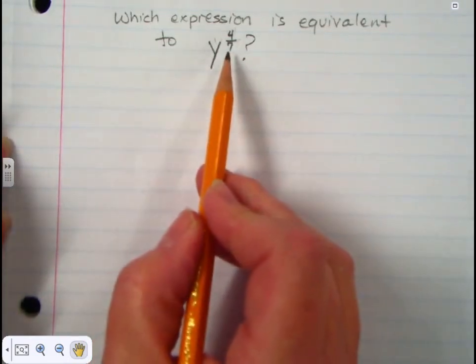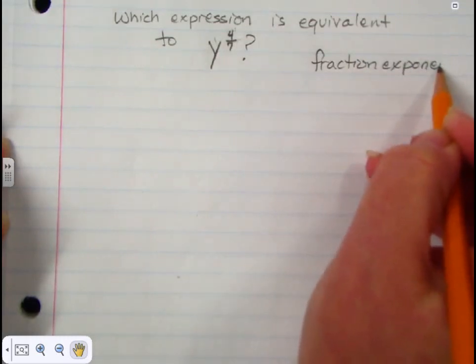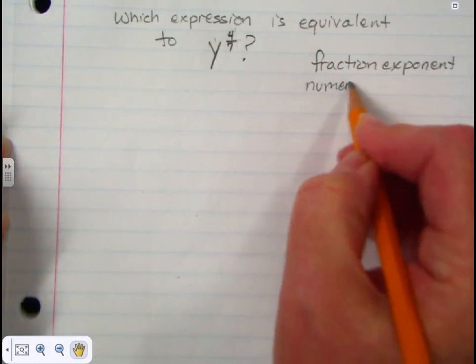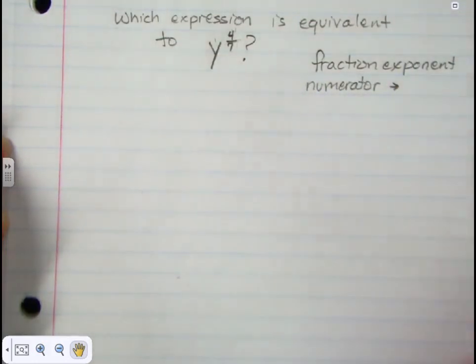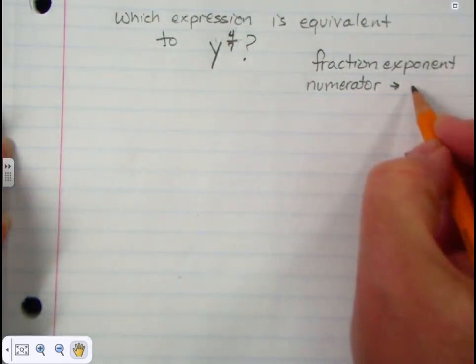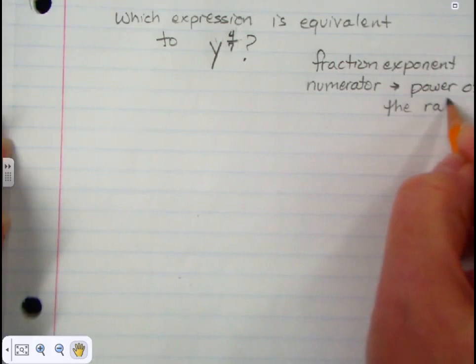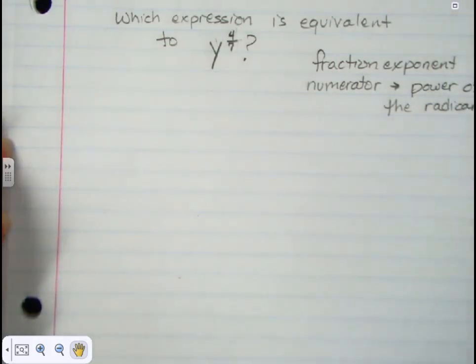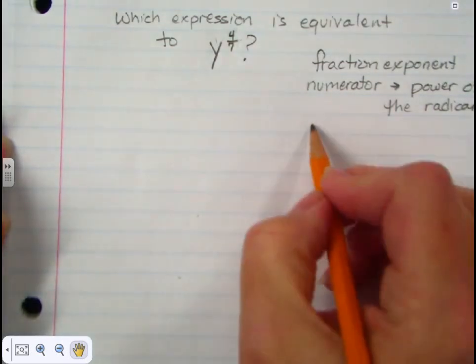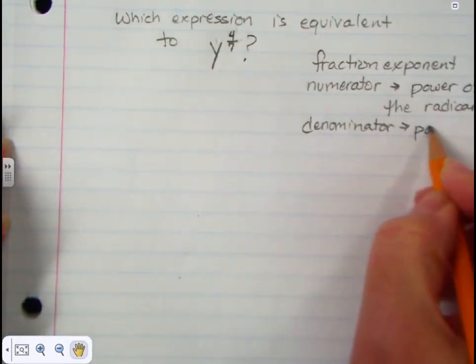We have a rational exponent — it's a fraction. When we have a fraction exponent, the numerator is the power of the radicand. The radicand is that expression that's underneath the radical sign. The denominator is the index of the root.